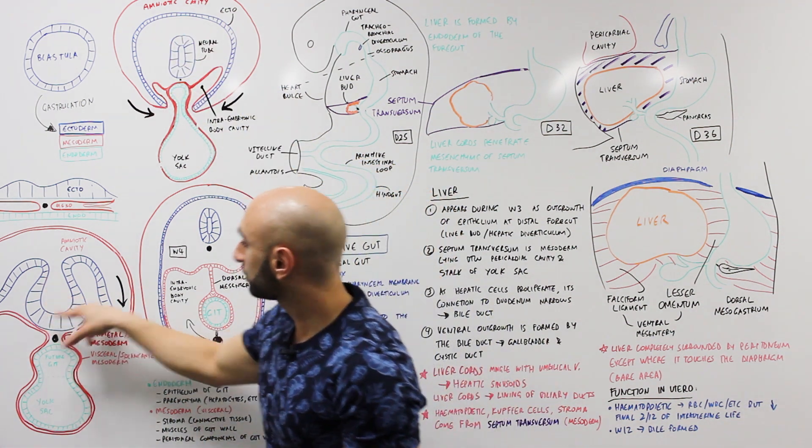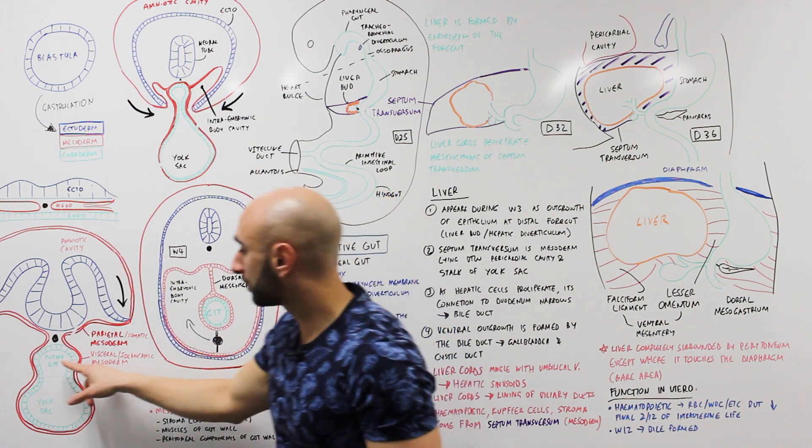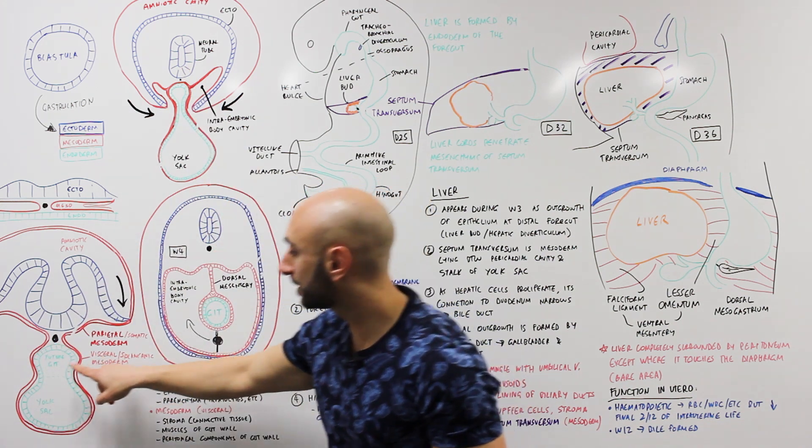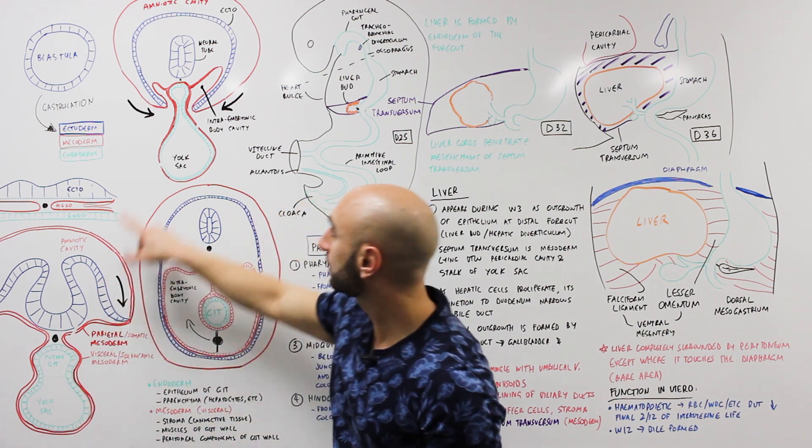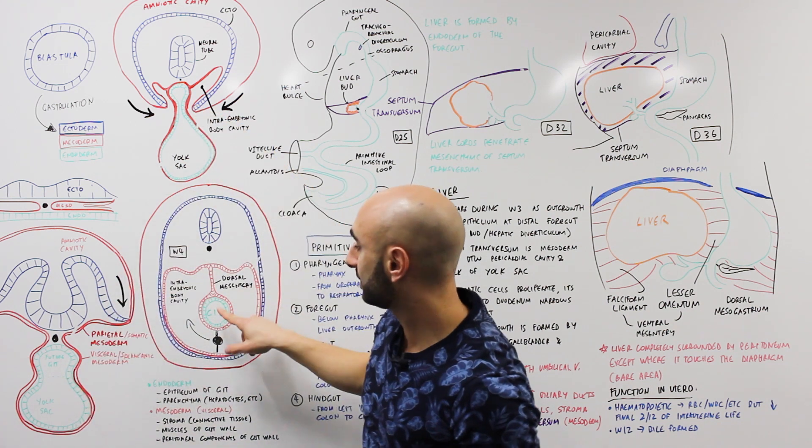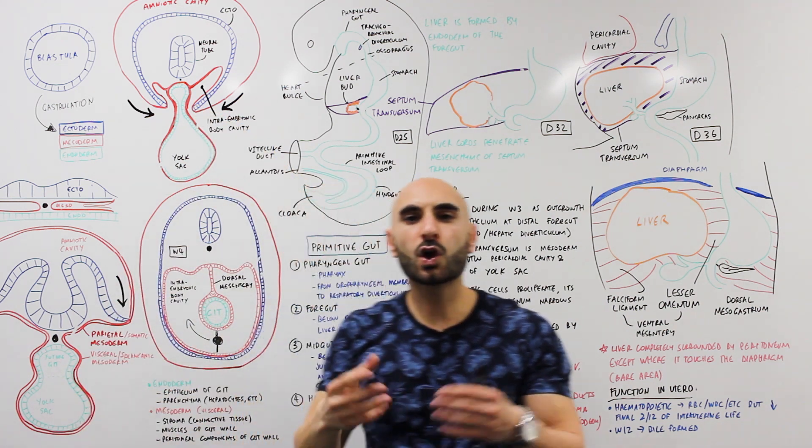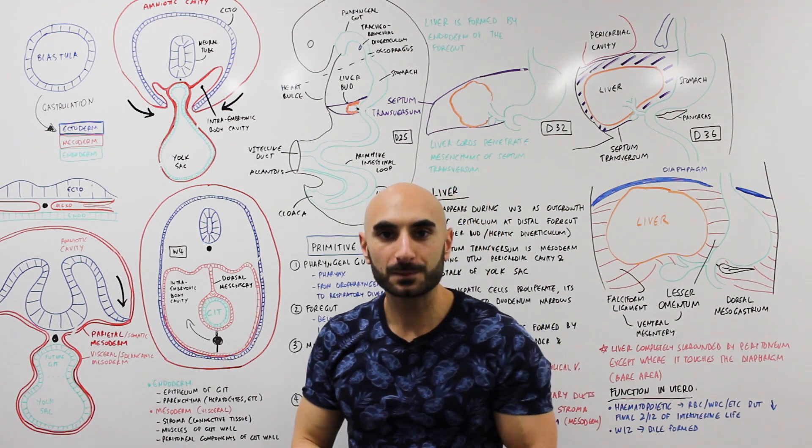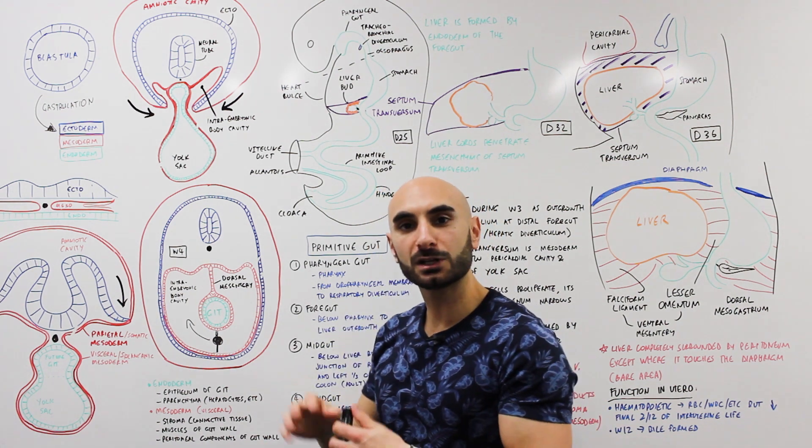At the same time this is happening, we also have the endoderm pinching off and becoming a yolk sac and the GIT. The yolk sac is just early nutrition for the embryo, a primitive structure that'll eventually go away.